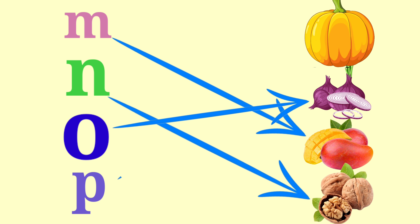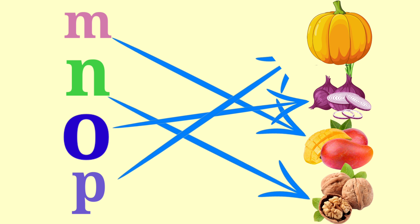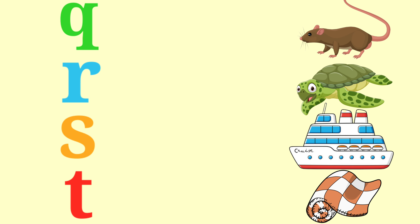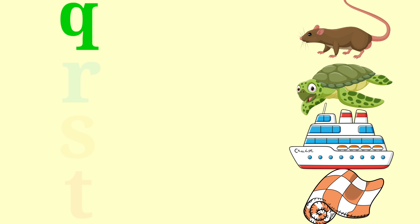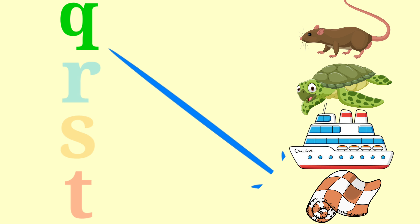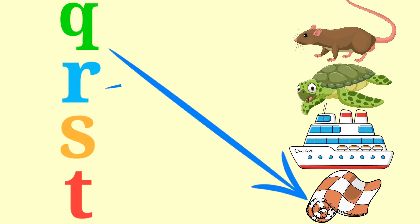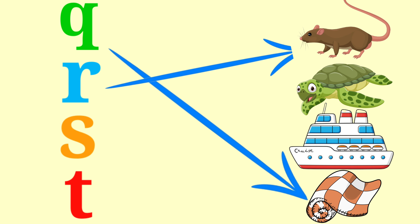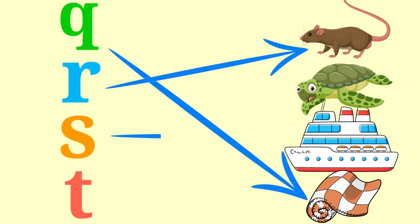P for pumpkin, Q for quilt, R for rat, S for sheep.